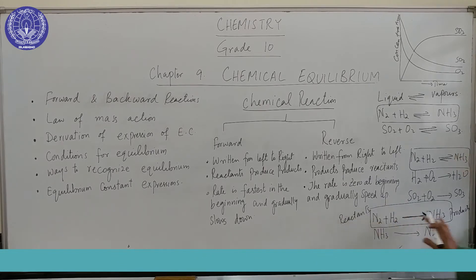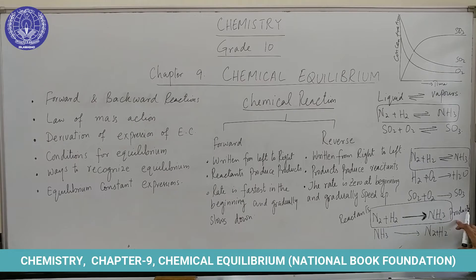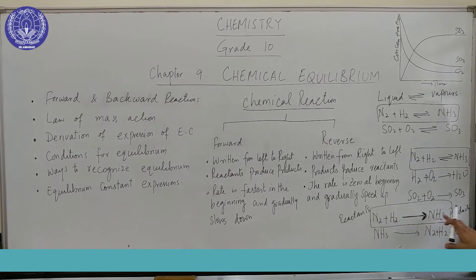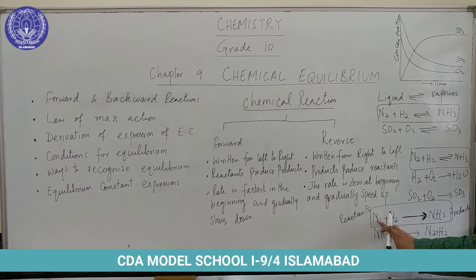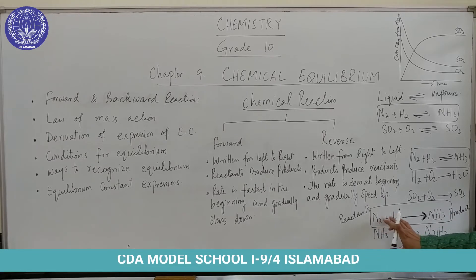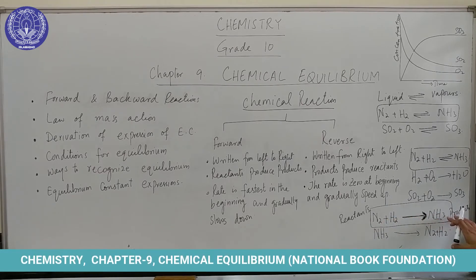So these are the reactants and these are the products. This chemical reaction is called the forward chemical reaction because it is written from left to right — the reactants are producing the products. The rate is fastest in the beginning and gradually slows down, because as the concentration of reactants decreases and they convert into ammonia, the rate of the reaction also slows down.